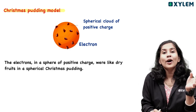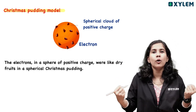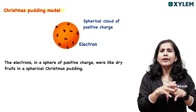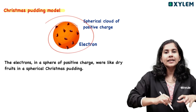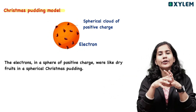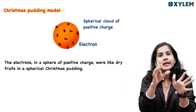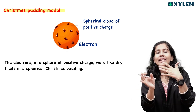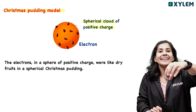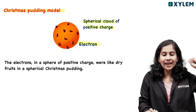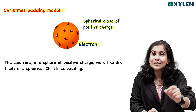This atom model is called the plum pudding model. It is also called the Christmas pudding model — because you can see it like a Christmas pudding cake. You can see a lot of nuts and dry fruits embedded in it. The edible part represents the positive charge, and the dry fruits, nuts, and electrons are embedded in it.